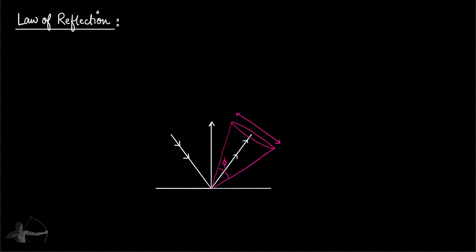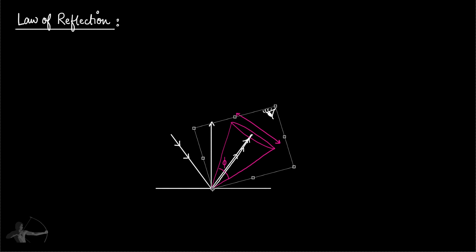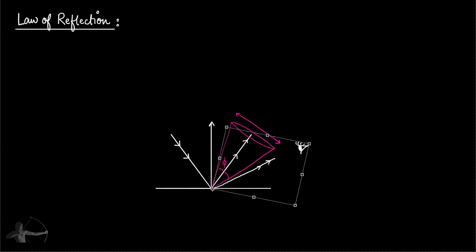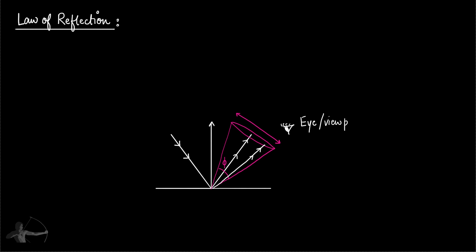The cone of reflectance also tells us that specular highlights will be visible if the eye direction is within the area of the cone. If the eye is right above the ray of reflection, the reflection will be brightest. If it is away from the reflected ray, reflection will be lesser, and once the view direction is outside this cone, the specular highlights will not be visible. This means the angle between the eye vector and reflected ray defines the intensity of specular reflection.